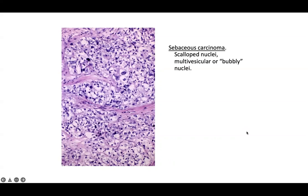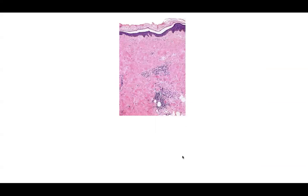The differential for a clear-cell tumor may include balloon cell melanoma, metastatic renal cell carcinoma, or other dermal clear-cell tumors. You can even have clear cell change in basal cell carcinoma or basal cell carcinoma with sebaceous differentiation. We'll stop here and start the next slide in the following lecture.